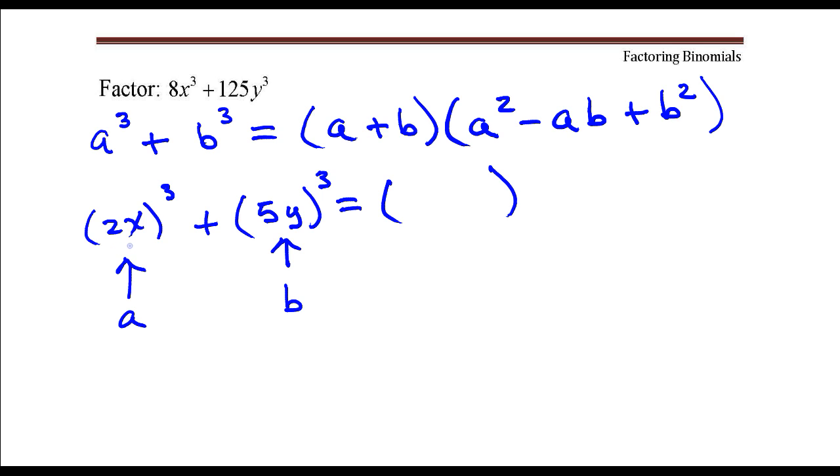So in this case, it's 2x plus 5y times a squared. So in this case, it would be 2x raised to the second power. That's going to give us 4x² minus a times b,